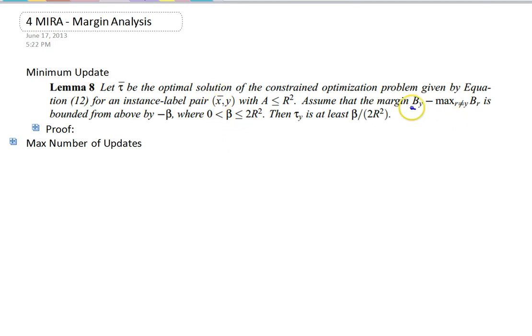So, first of all, we're going to assume, basically, that the best one is better than the correct one by at least negative beta.